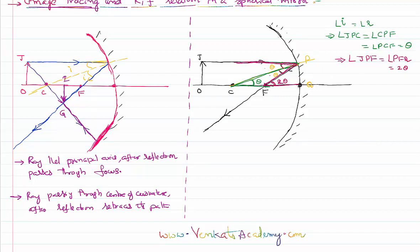I can now draw one more light ray passing from the object through the center of curvature. This incident light ray will retrace its path after reflection. So this is reflected light ray 1, this is reflected light ray 2, and they meet at this point where the image is formed, just as I explained in the previous diagram.